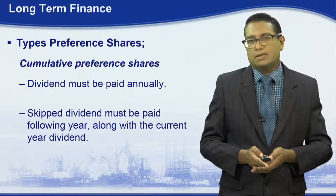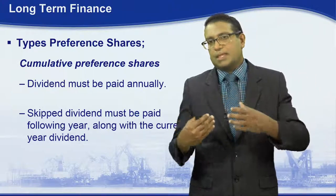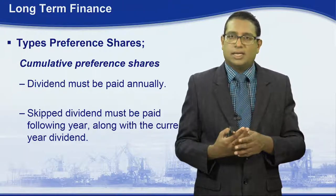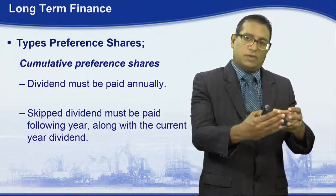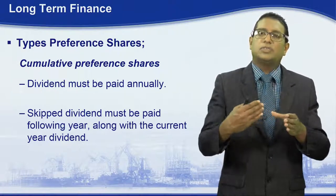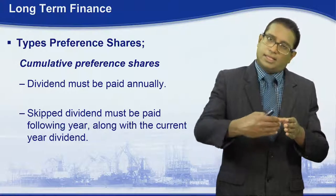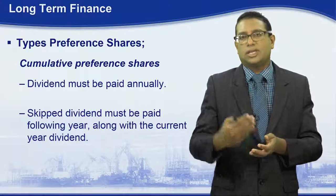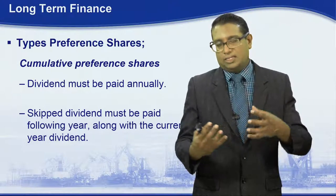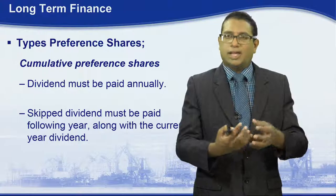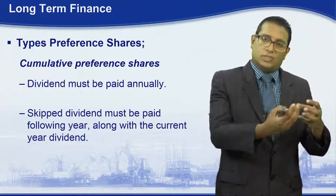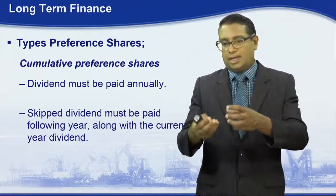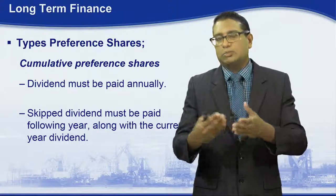Cumulative preference shares work as follows: if in one particular financial year the dividend was not paid, whatever the dividend amount will be carried forward to the next financial year. As the word 'cumulative' correctly identifies, the dividend is cumulatively accrued and paid in a particular year where it should be paid.